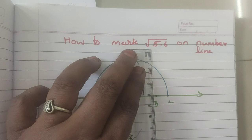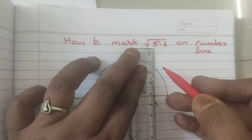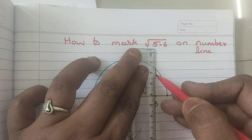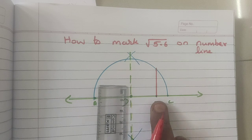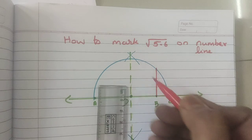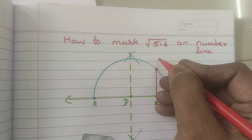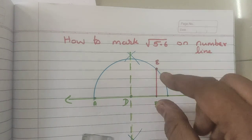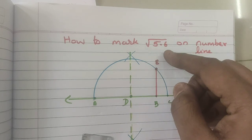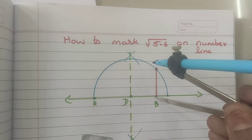Now, you should join, you should draw a perpendicular line from B, draw a perpendicular line from B to this semicircle. Mark it as some other alphabets. Let me take E. So, now, this is the measurement that is root 5.6. So, how to mark the point on the number line?